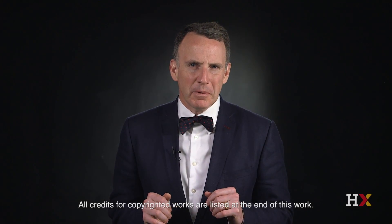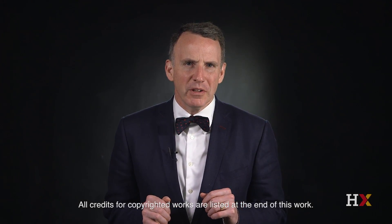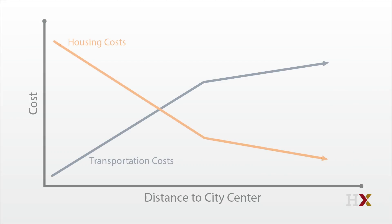Let's return to our simple Alonzo-Muth-Mills model of prices within a metropolitan region. Transport costs go up with distance from the city center, and housing costs go down to offset the added cost of commuting.